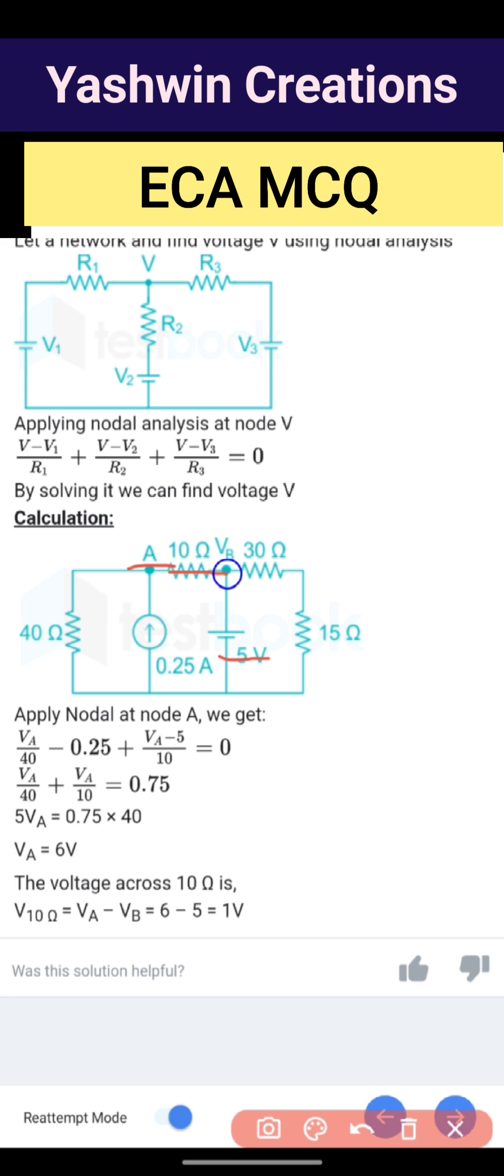Next, Va divided by 40 plus Va divided by 10. This minus 0.25 and 5 divided by 10 is 0.5, that becomes 0.75. If it comes to the other side, plus 0.75. Next, if you take LCM, you will get 5Va.